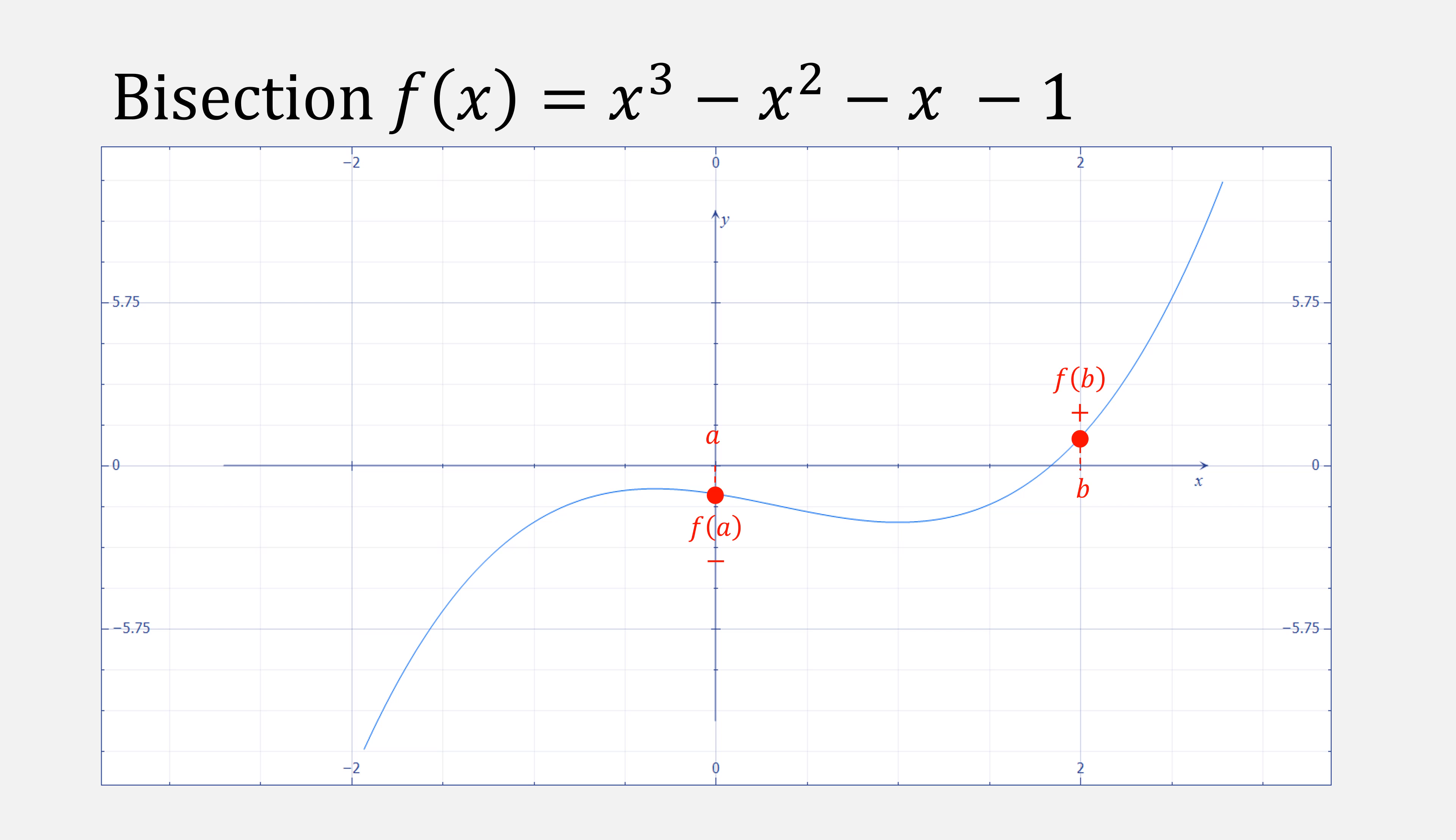In bisection we're given two points a and b where the function has different signs at those points. We compute the midpoint c, which is a plus b over 2, and test its sign. Whichever one it matches, we use that for our new a and b. And we repeat the process with new c.